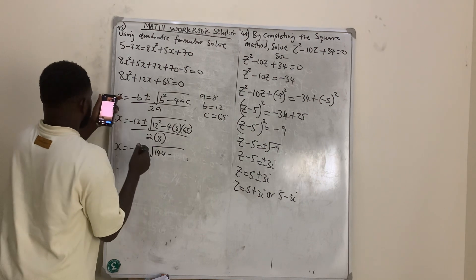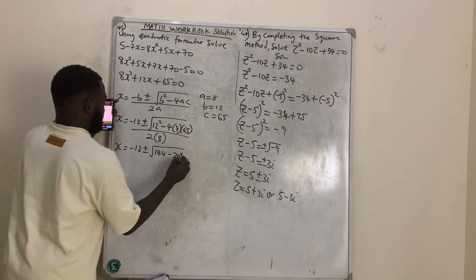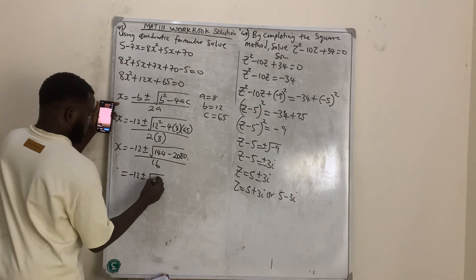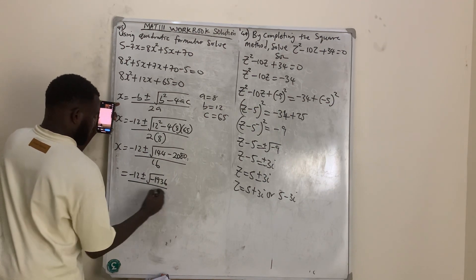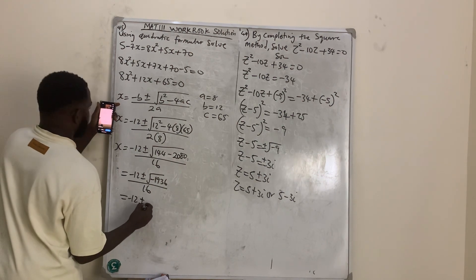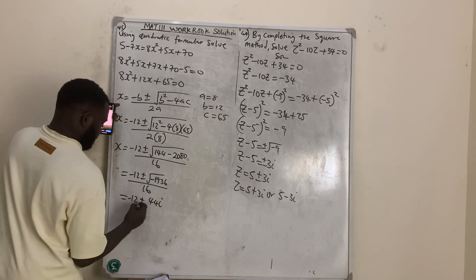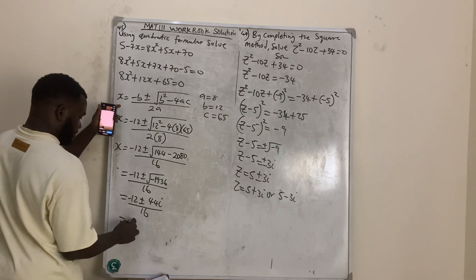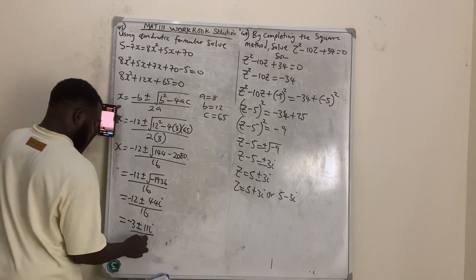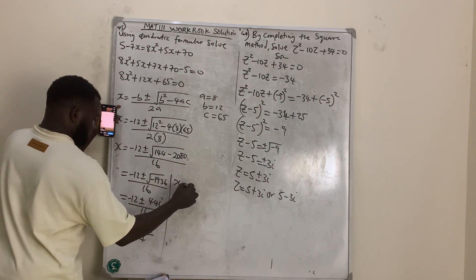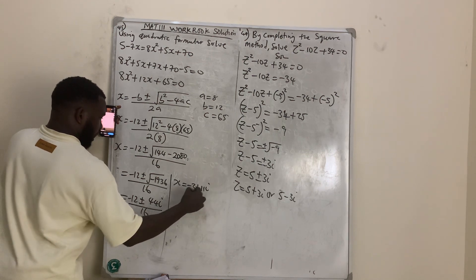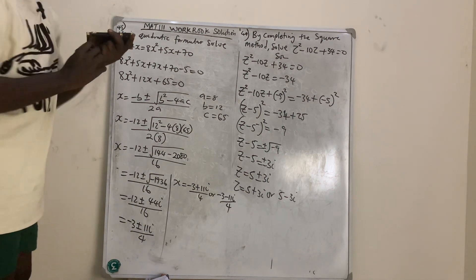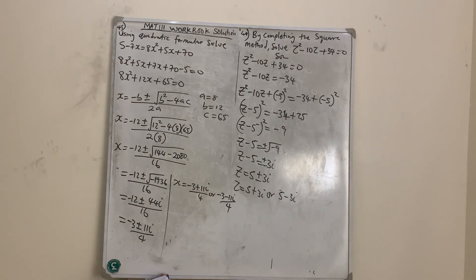Evaluating: 12 squared minus 4 times 8 times 65 gives negative 1936, and 2 times 8 is 16. So x equals negative 12 plus or minus the square root of negative 1936, all over 16, which is negative 12 plus or minus 44i over 16. Dividing by 4: x equals negative 3 plus or minus 11i over 4. Solutions: x equals (negative 3 plus 11i) over 4 or (negative 3 minus 11i) over 4.